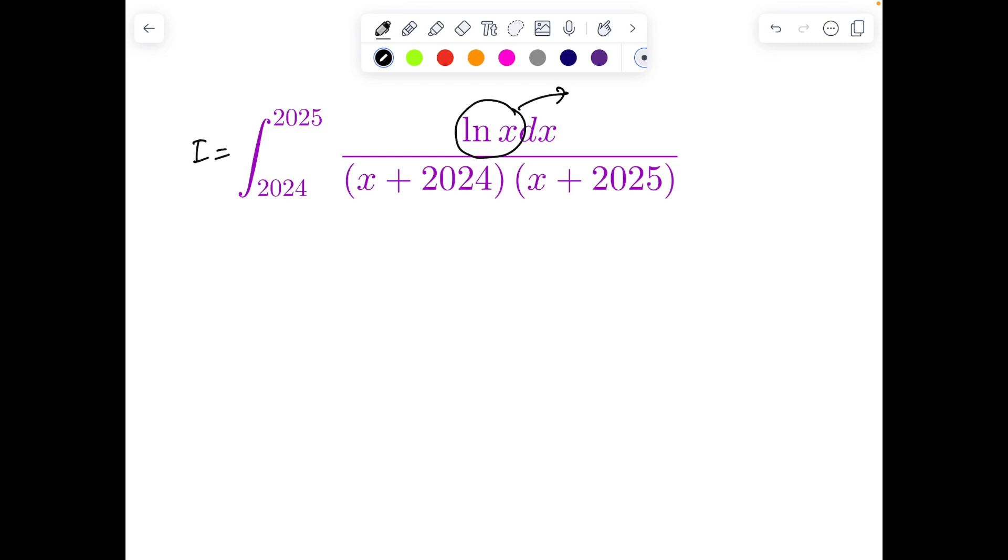When you have two spaces, algebraic x and logarithmic, the usual thought process is either you use King's rule or integration by parts. Unfortunately, none of them in the first go is trying to work appropriately. If I replace x with 2029 minus x, things become very dramatic still.